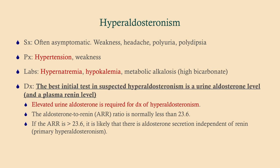The symptoms of hyperaldosteronism are fairly nonspecific: weakness, headache, polyuria, polydipsia, and hypertension from reabsorbing more salt and water. Labs show hypernatremia and hypokalemia. Patients can also develop metabolic alkalosis, because with low potassium, hydrogen ions are excreted instead, acidifying the urine. In general, hypokalemia tends to coexist with metabolic alkalosis, and hyperkalemia with metabolic acidosis. The best initial test for suspected hyperaldosteronism is a urine aldosterone level along with a plasma renin level — together they tell you whether hyperaldosteronism is present and whether it is primary or secondary. An elevated urine aldosterone is the hallmark of hyperaldosteronism.